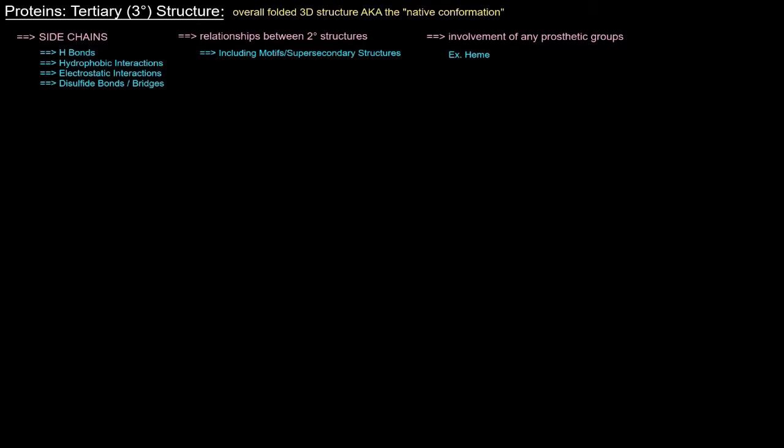Tertiary structure refers to the overall folded 3D structure, otherwise known as the native conformation. The key thing to keep in mind is interactions between the side chains — hydrogen bonds, hydrophobic interactions, electrostatic interactions, and disulfide bonds. This also includes relationships between secondary structures, which includes motifs or super secondary structures, and the involvement of any prosthetic groups like heme in hemoglobin.